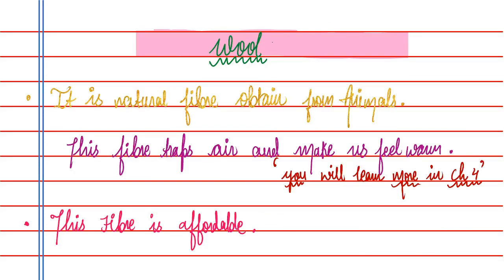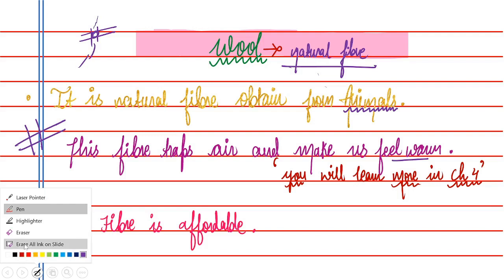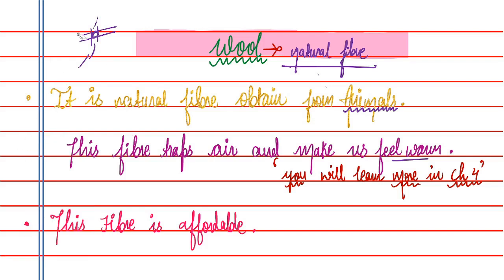Let's move on to wool. Wool is a natural fiber — yes, you guessed right! Wool is a natural fiber obtained from animals. These fibers trap air and make us feel warm. It traps air because the fiber structure has gaps: air gets trapped inside, and your body heat is retained while the cold stays outside.